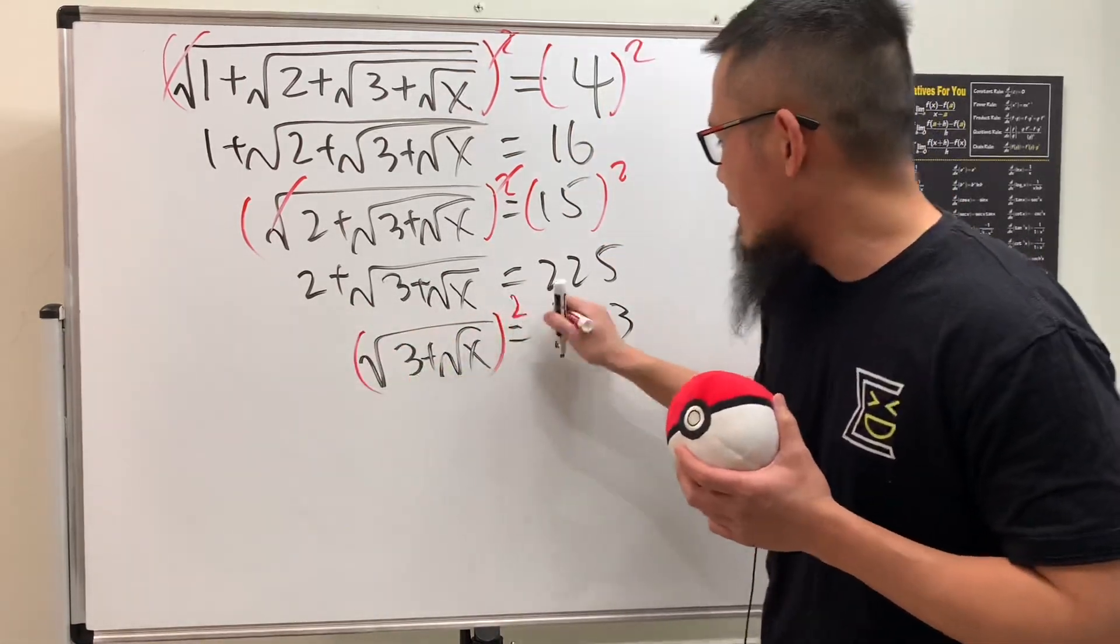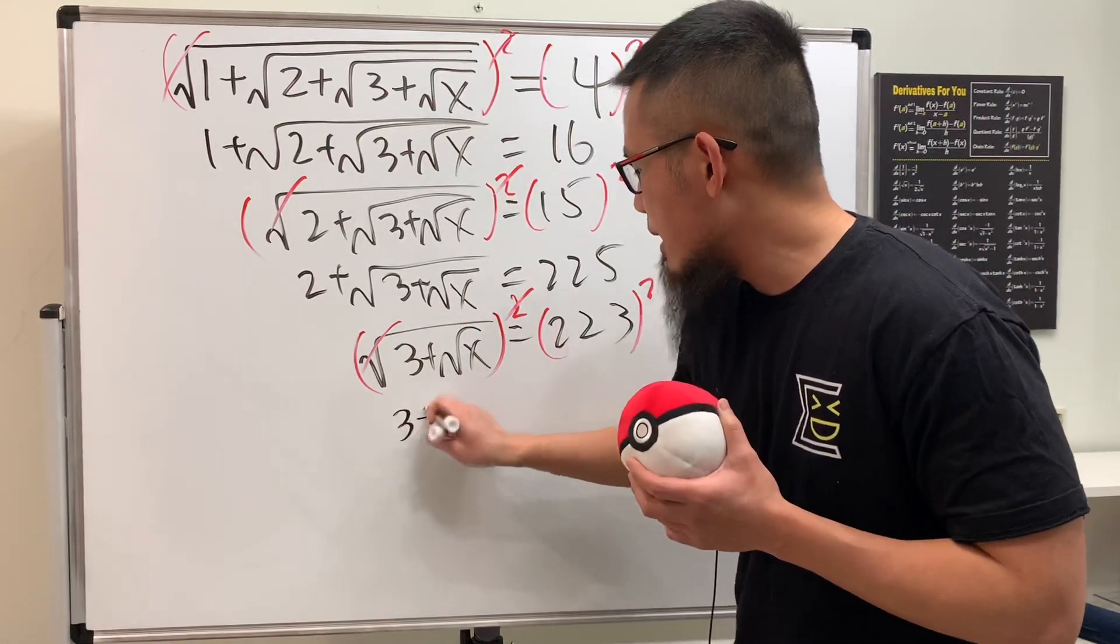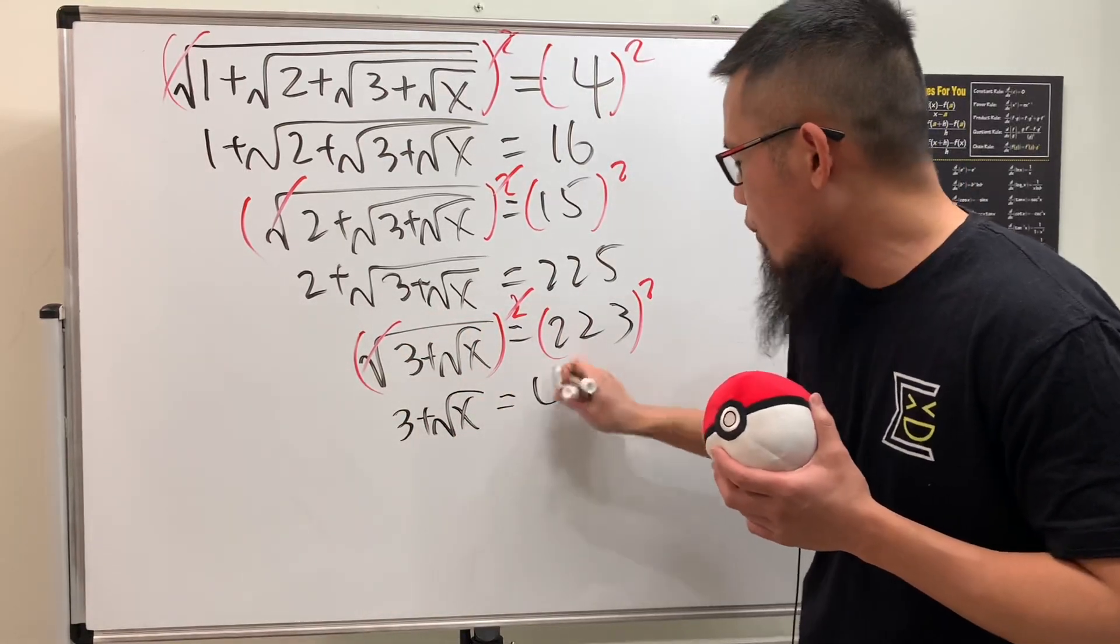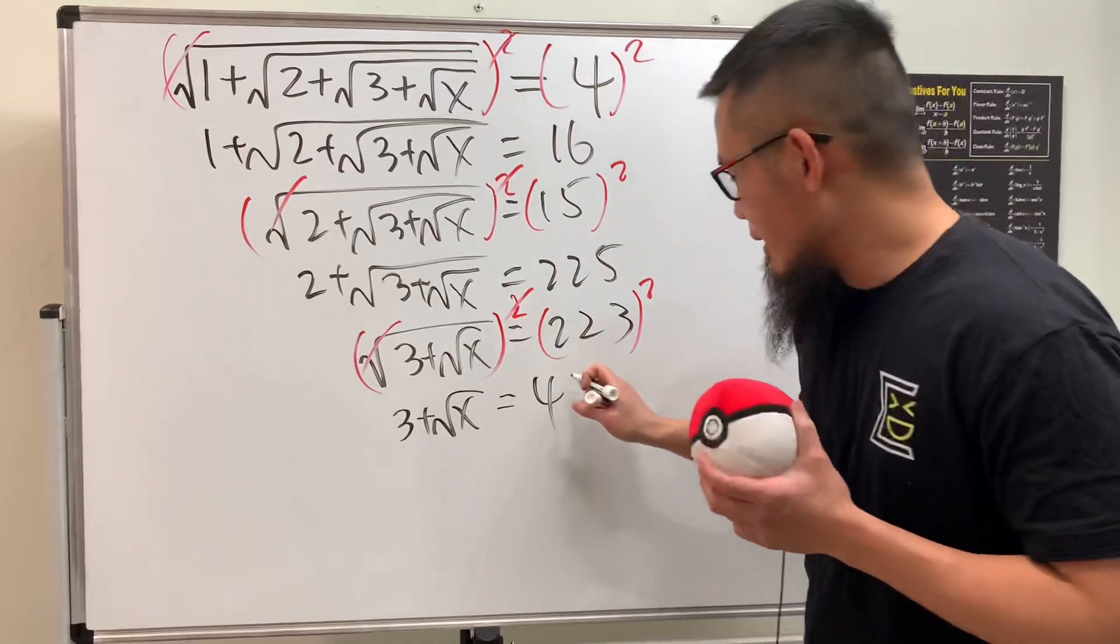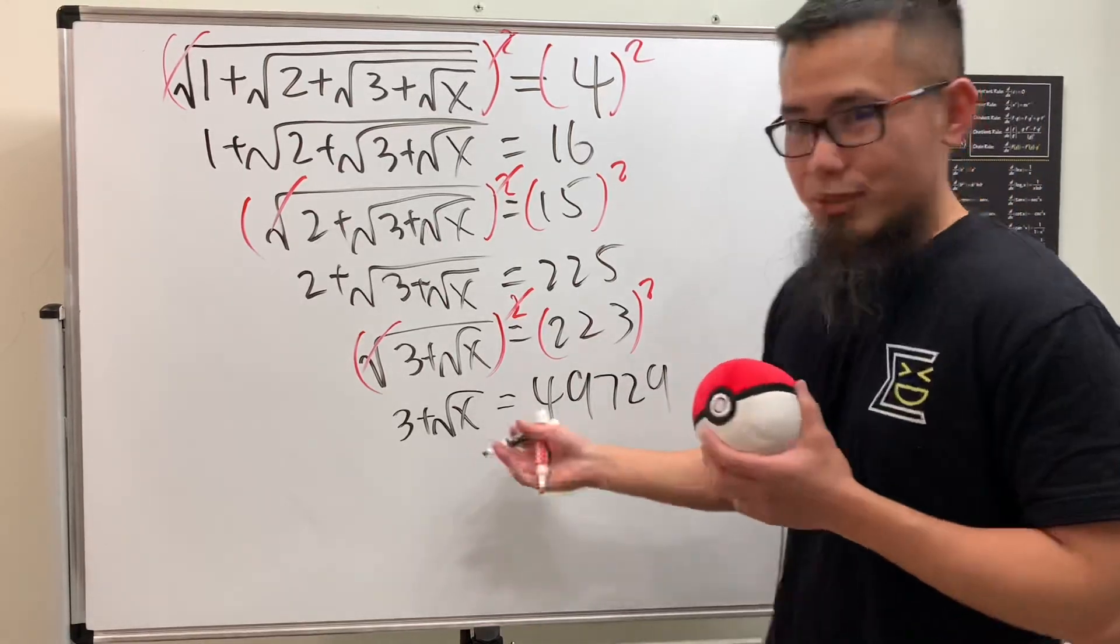Now we're going to square both sides, so we get 3 plus the square root of x equals 49,729. Then minus 3 from both sides,